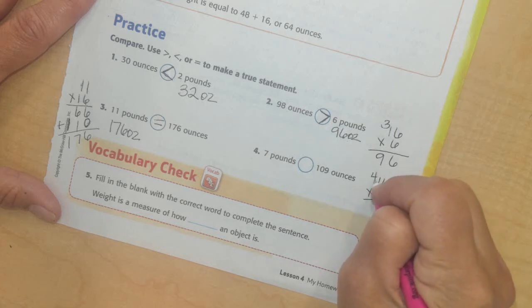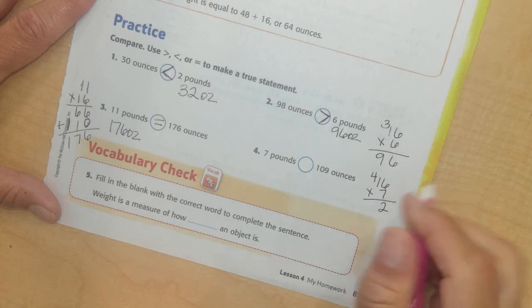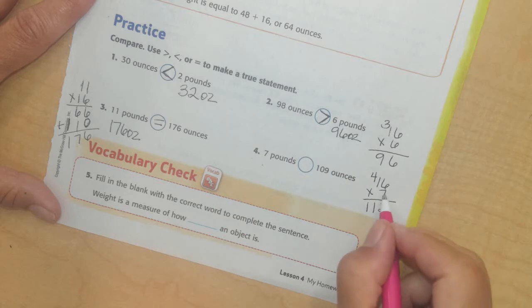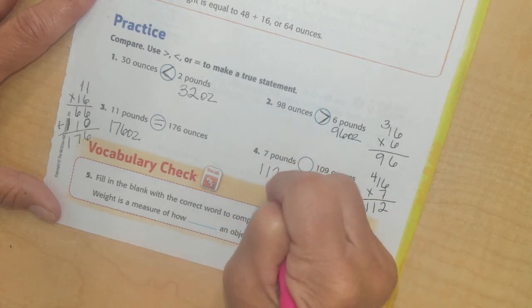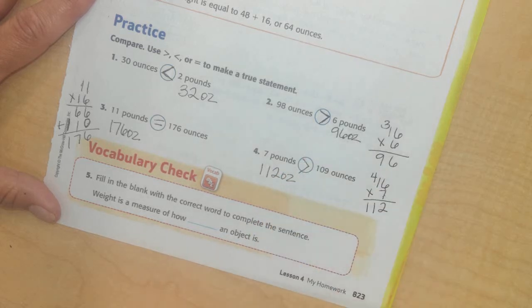So 6 times 7 is 42. Hopefully you know that one, that's a tricky one. I carry my 4. 7 times 1 is 7, plus 4 is 11. So now I just multiply one time because I only have the ones place. So I'm going to do 112 ounces is greater than 109 ounces.